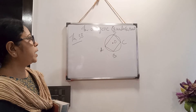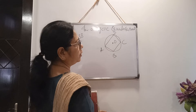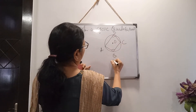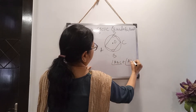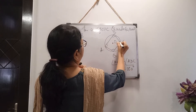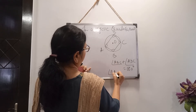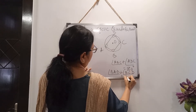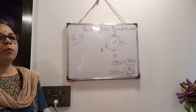Now, opposite angles. We have to prove that the opposite angles of a cyclic quadrilateral are supplementary. That means we have to prove angle ABC plus angle ADC equals 180 degrees, and also angle BAD plus angle BCD equals 180 degrees. These two we have to prove.